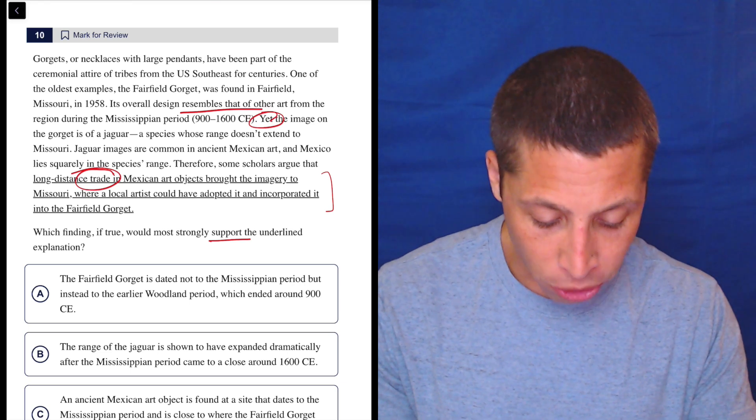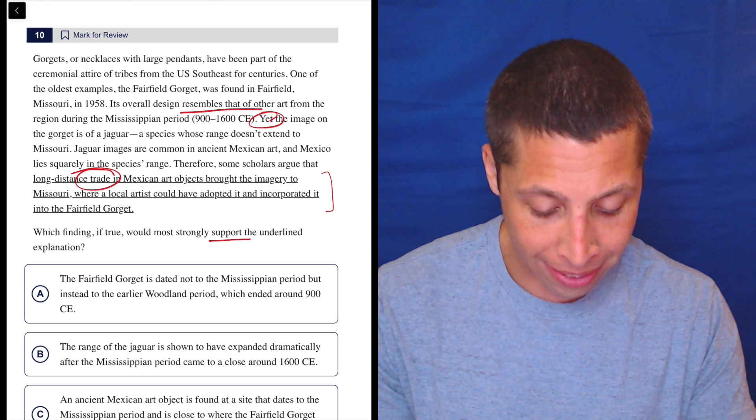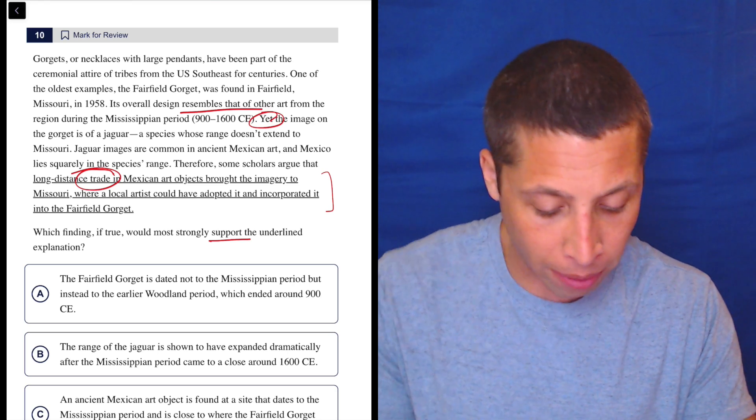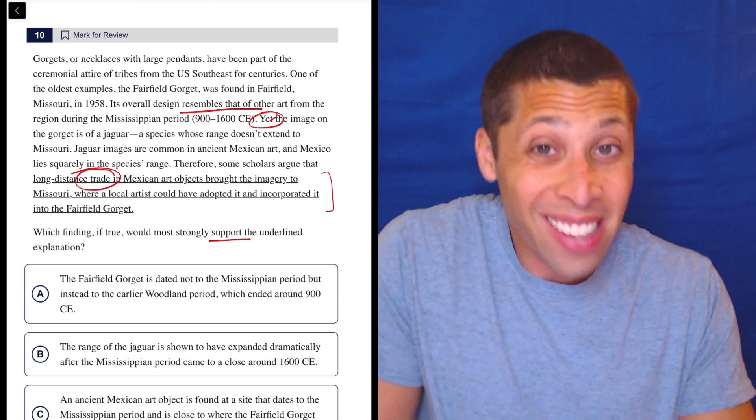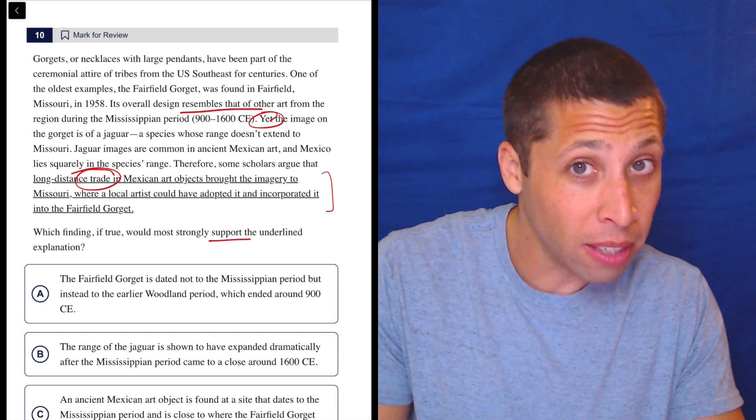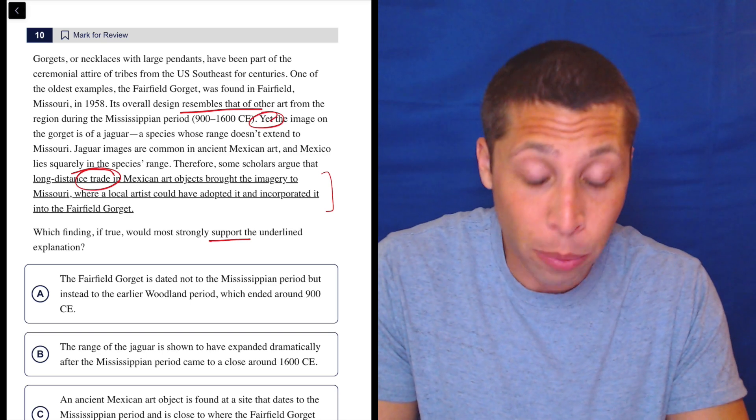A, the Fairfield gorget is dated not to the Mississippian period, but instead to the earlier Woodland period, which ended around 900 CE. It's not about the trade. It's not about this thing moving. I don't know why the time would have anything to do with it.